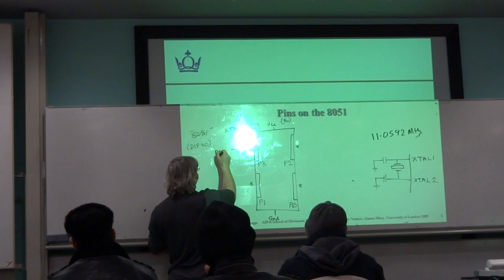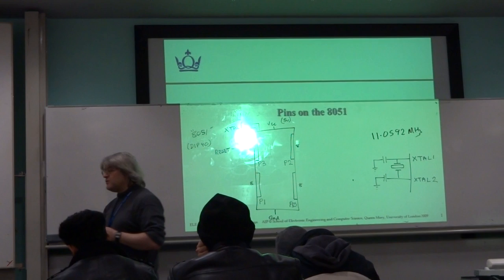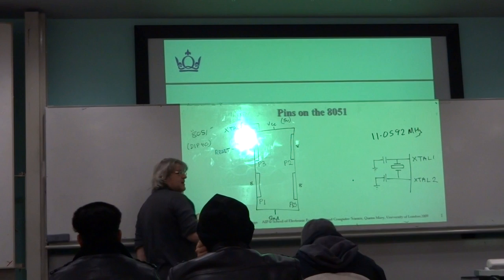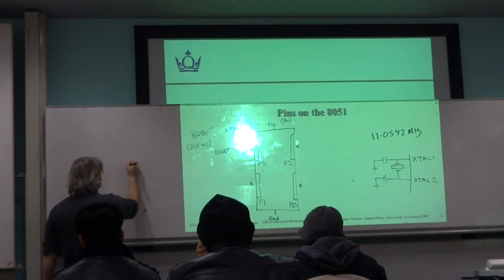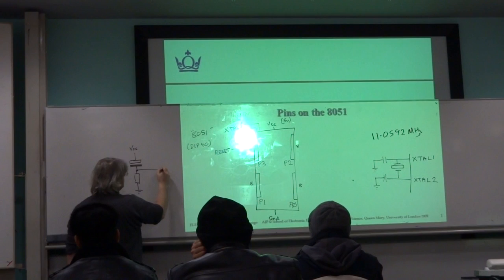We've got a pin on here somewhere called reset. And the reset on a classic 8051 is active high. So when you switch it on, the reset pin needs to be held high for a certain amount of time, and then after a while, brought low. A very simple circuit for achieving this looks something like this.